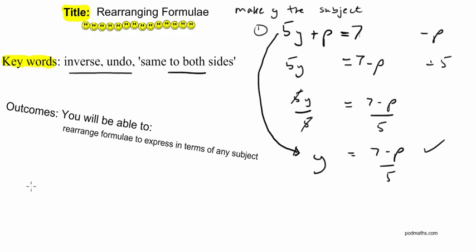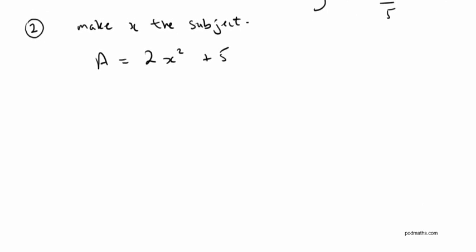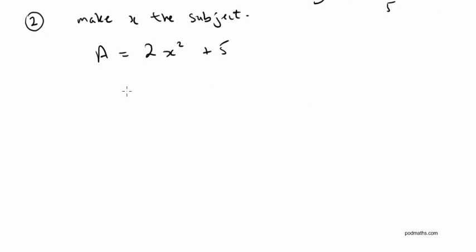A slightly more challenging example — let's call this number 2. In this one we're going to make x the subject. The formula is a equals 2x squared plus 5. This is quite a bit more challenging, but the same principles apply: same to both sides, and undoing what's done to that x to get it on its own. The x is being squared, then multiplied by 2, and then 5 is added to it.